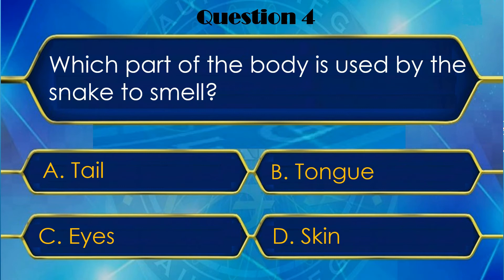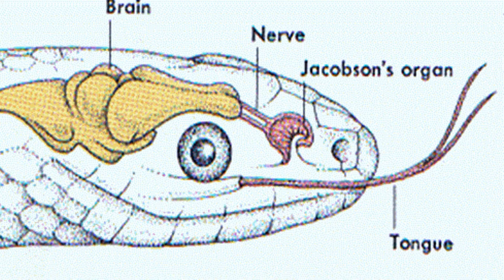B — Tongue. Okay, let me check. Yes, tongue is the right answer. Friends, abhi main aapko snake ke andar smell ko sense karne ka jo poora process hai, wo samjhaane ja raha hoon — yeh bahut hi amazing aur interesting hai.